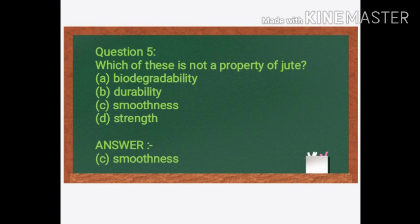Next question: Which of these is NOT a property of jute? Options: A. Biodegradable, B. Durability, C. Smoothness, D. Strength. The answer is C. Smoothness. Smoothness is not a property of jute — jute is rough, not smooth.